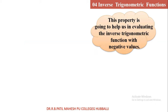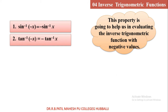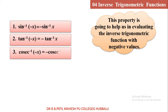This property is going to help us in evaluating the inverse trigonometric function with negative values. When the inverse trigonometric function carries negative values, then we apply these properties. Number 1: sin inverse of minus x equals minus sin inverse x. Number 2: tan inverse of minus x equals minus tan inverse x. Number 3: cosec inverse of minus x equals minus cosec inverse x.